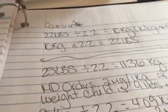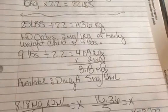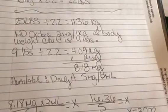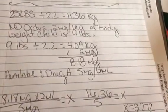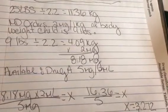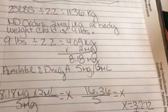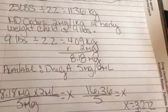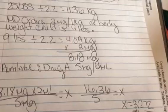Let's go over a sample problem. The patient is 25 pounds, so we divide it by 2.2, giving you 11.36 kilograms. You do not want to round to the nearest tenth until you get to the end. The doctor orders 2 milligrams per kilogram of body weight, and the child is 9 pounds.